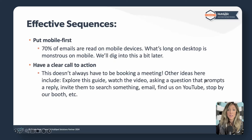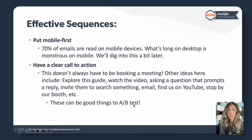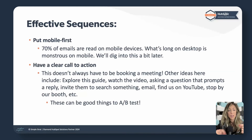Have a clear call to action — and it's not always booking a meeting. This is where I really like to use AI: what are some ways to ask for action that aren't booking a meeting? Things we've used in the past: explore the guide, watch the video, ask them a question, invite them to search something, find us on YouTube, stop by the booth. These are also really good things to AB test. I ran a sequence recently where the subject line and intro were the same but there were two calls to action instead of one — does putting a CTA above the content change results? You can put that to the test.